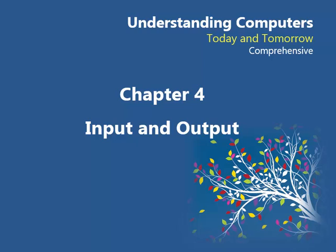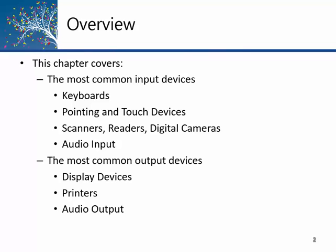Hello and welcome to this lecture on Chapter 4, Input and Output. In this chapter we will be looking at the most common input devices and output devices you are going to run across and be using personally. From input devices, this chapter talks about keyboards, pointing and touch devices, scanners, readers and digital cameras, and audio input. On output, this chapter discusses display visual outputs, printed hardcopy outputs, and audio output. The reading goes into more material than what we'll cover in this recording, but I want to highlight these main categories.